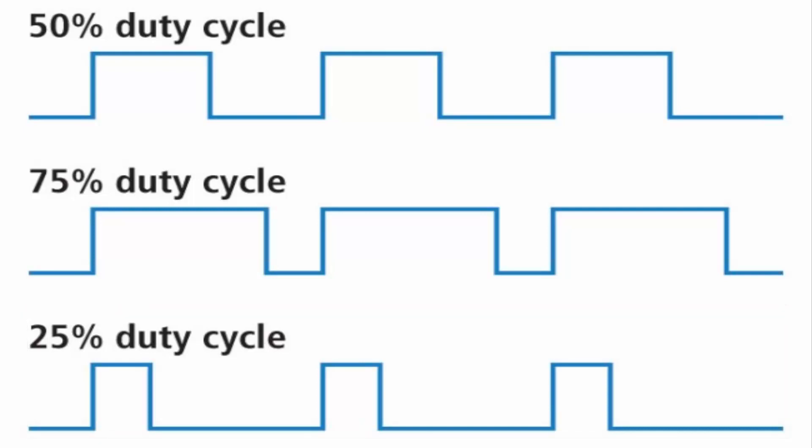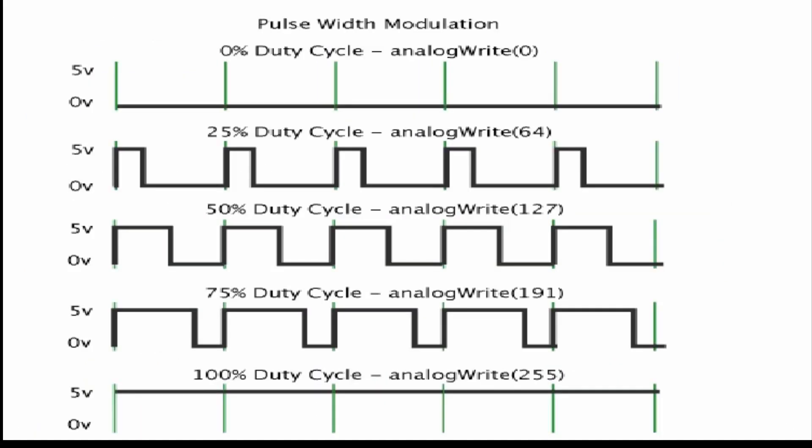And the total time is known as the time period of PWM. In case of MSP430G2 Launchpad, the default frequency is 600Hz which is inversely proportional to time period. In the next video, we will see how to generate PWM with MSP430G2 Launchpad.